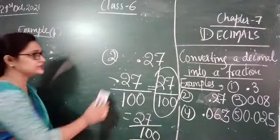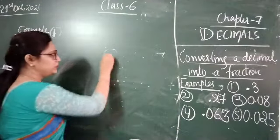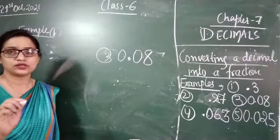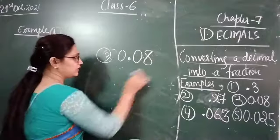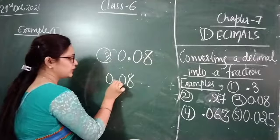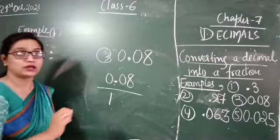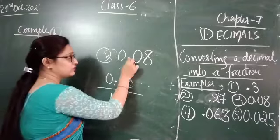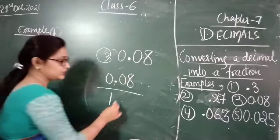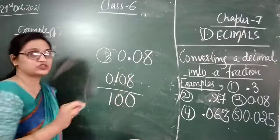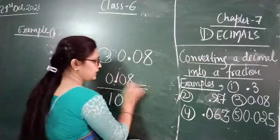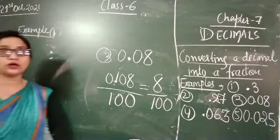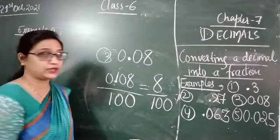Now let us consider example number 3: 0.08. Same steps — write 0.08 in place of the numerator. In place of the denominator, write 1 followed by zeros. Observe the place values: ones and tens — two place values — so we put two zeros and remove the decimal point. What is left in the numerator? The leading zero has no value, so we get 8 upon 100. This is the fraction, but we can simplify it.